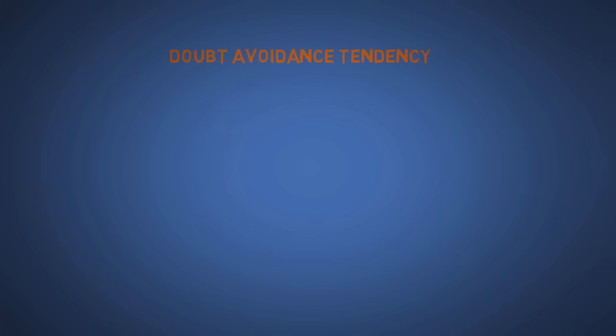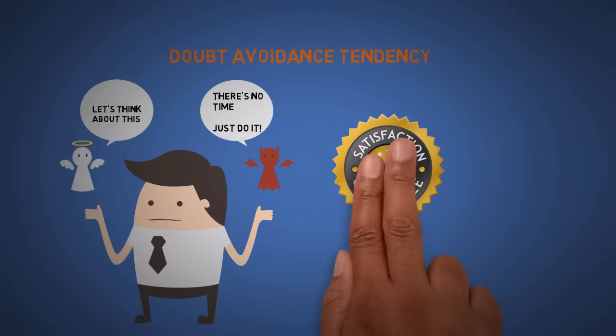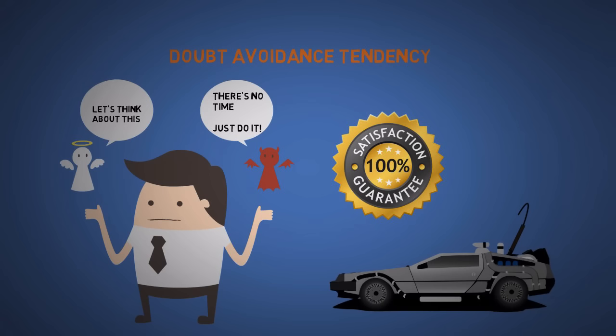The fourth is doubt avoidance tendency. If we are unsure about a decision, we try to quickly remove any doubt by making an ill-informed, quick decision. So if you want to become more persuasive, then simply increase your certainty. Like if you don't enjoy the rest of this video, then I promise you a free time machine so I can refund your time. No questions asked.